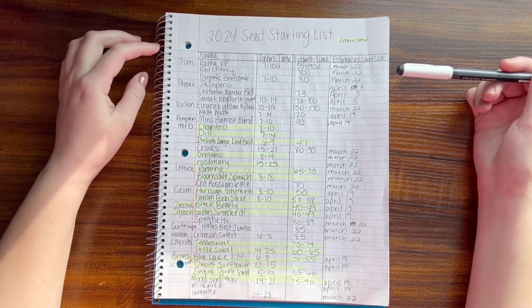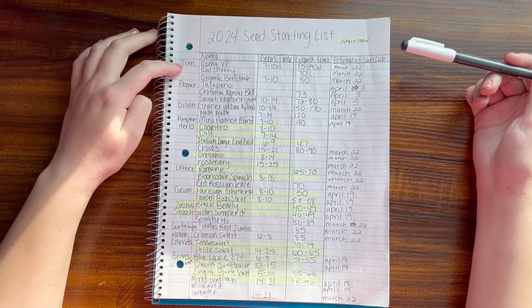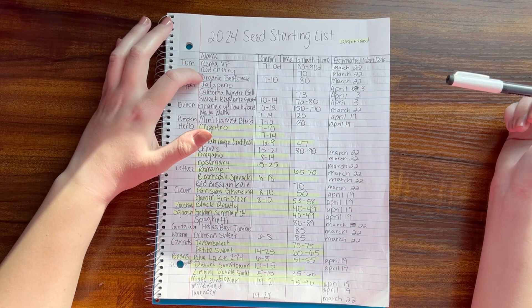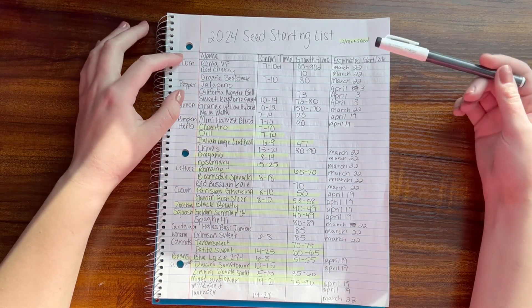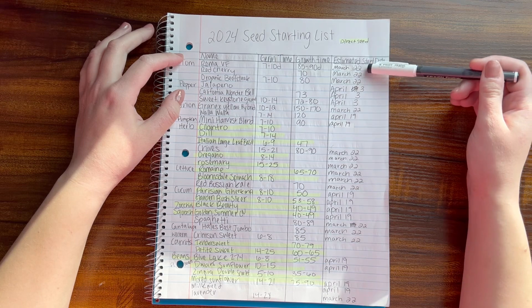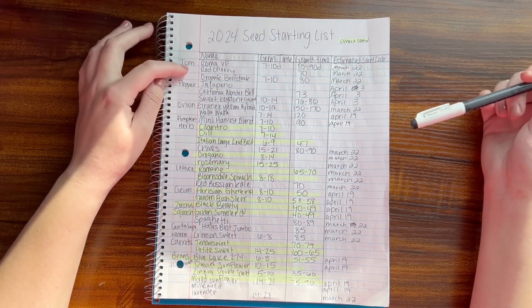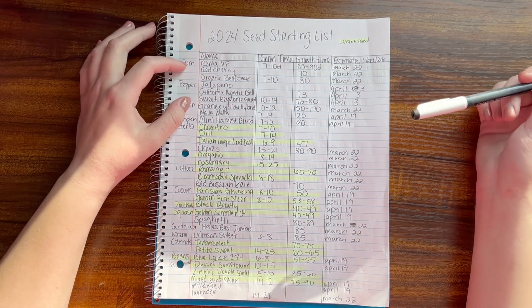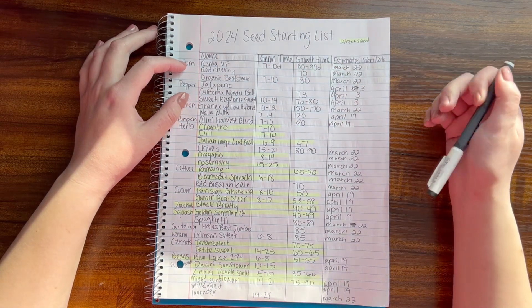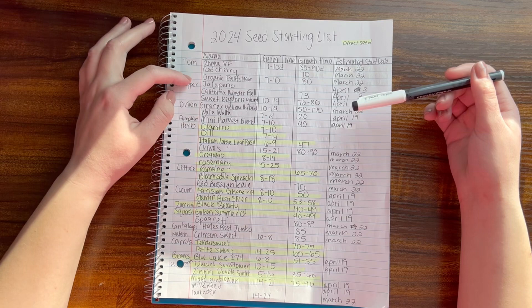Let's start with tomatoes. I'm planning on doing some Roma, some red cherry tomatoes, and then a beefsteak tomato. I'm going to start my tomatoes on March 22nd. This will take about a week and a half to germinate, so that gives me six to eight weeks before my last frost, which I'm estimating about March 15th.